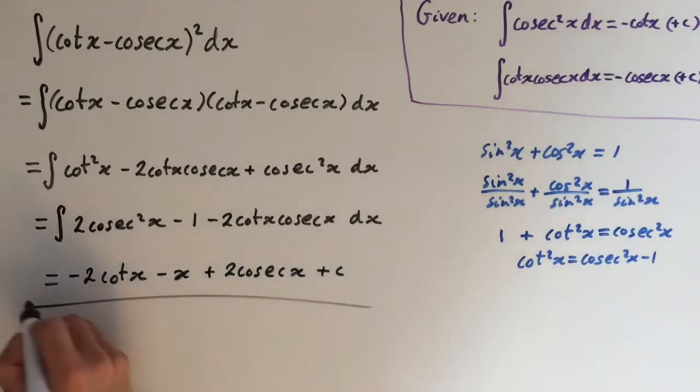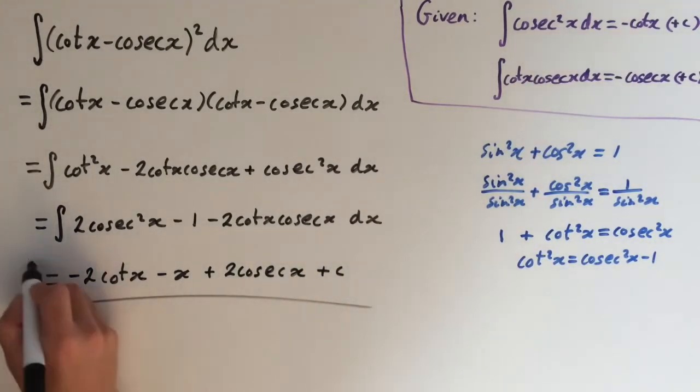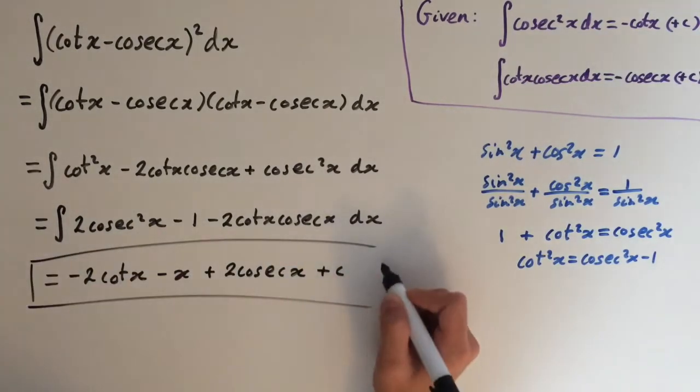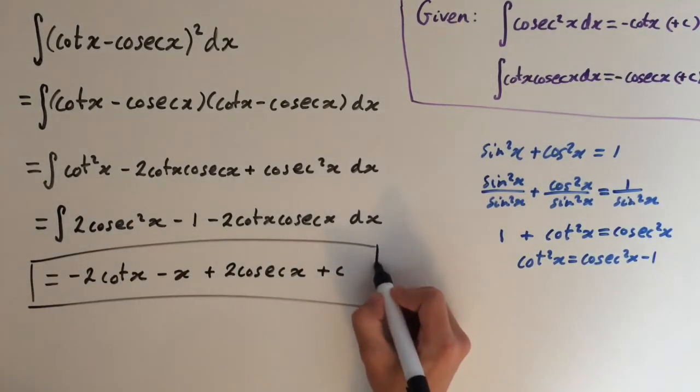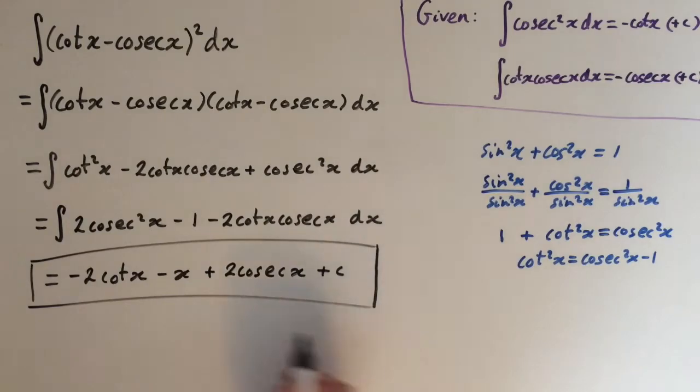So there you go — that's the integral of cot x minus cos x, all squared.